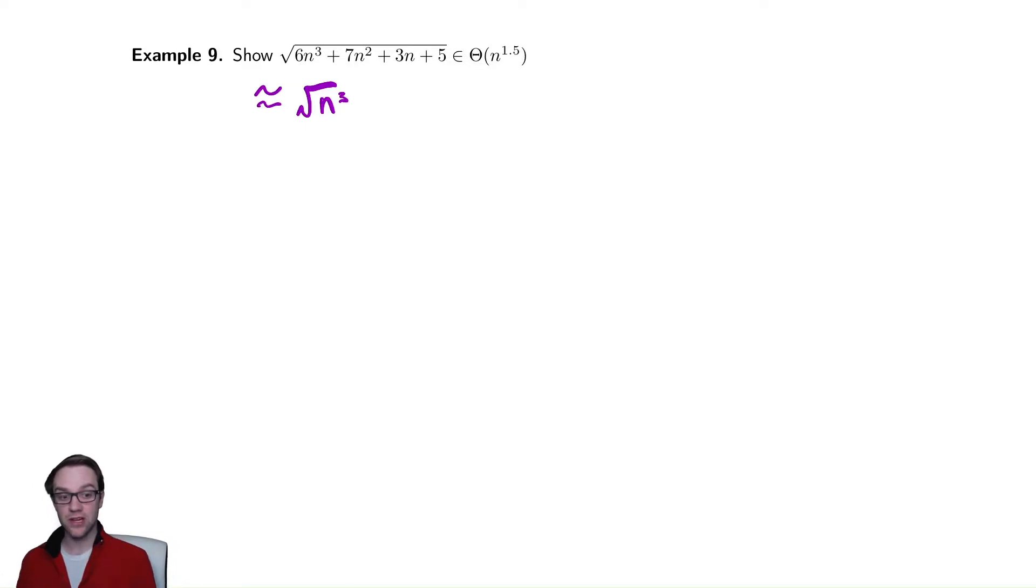So this is trying to prove our intuition that the biggest thing inside of the square root works out correctly. So how are we going to show that something's in theta? We actually have no new rules. All you need to do to show that something is in theta of some function is show that it is in big O of that function and also in big omega of that function.